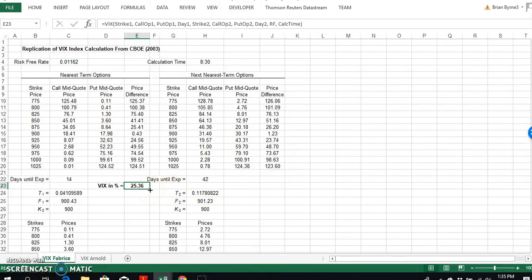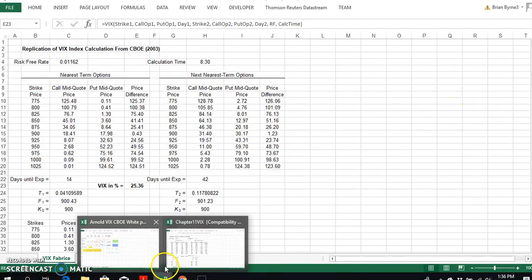And they get a figure of 25.36 also. So this figure that's given here in the Fabrice Roa and Gregory Weinberg Chapter 11, they make the same estimate for the VIX index and they get 25.36.